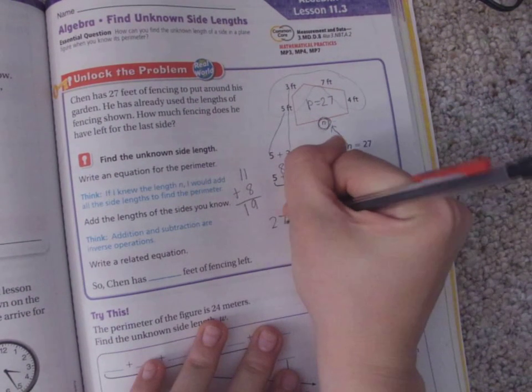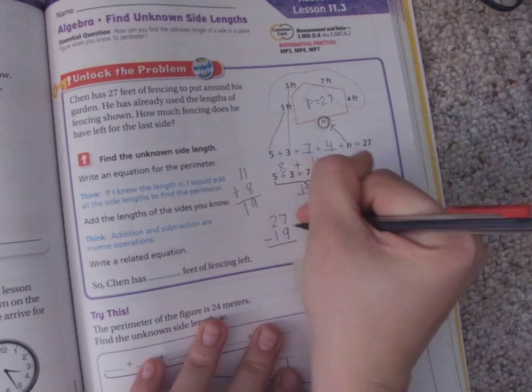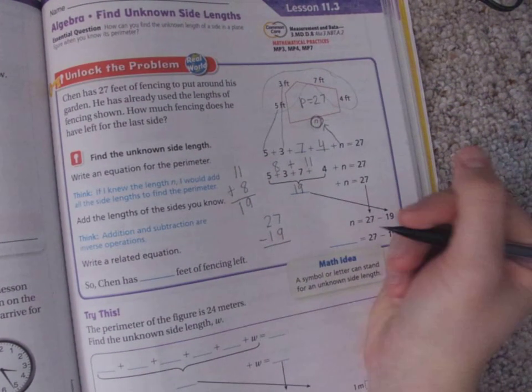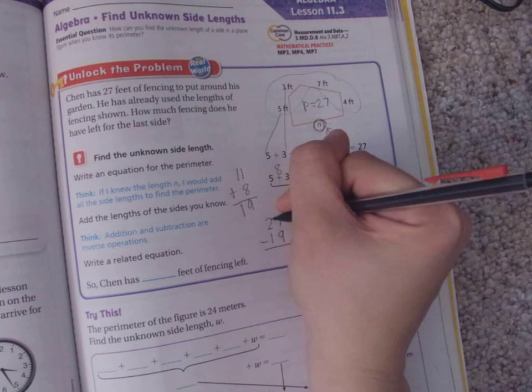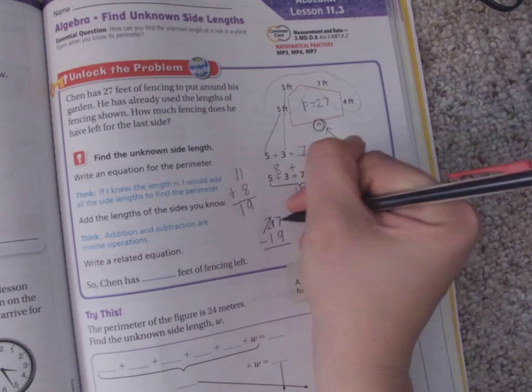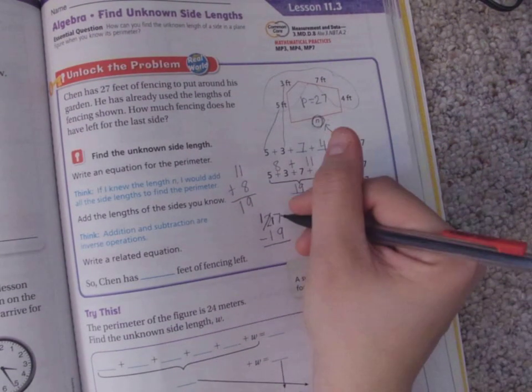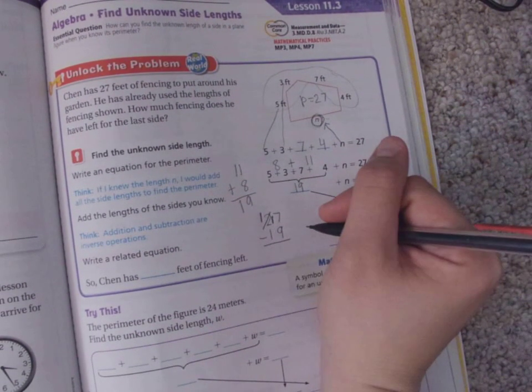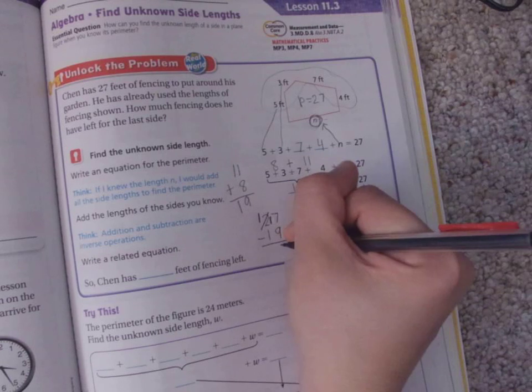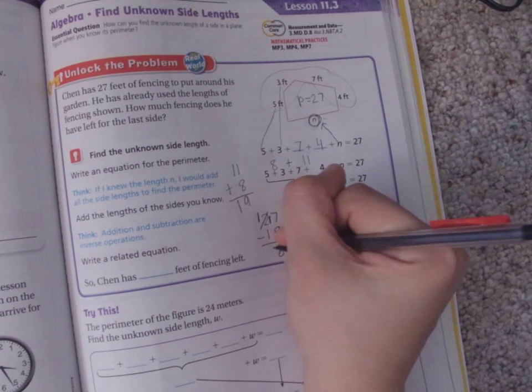So we need to do 27 minus 19. This is a throwback to our borrowing. So can I do 7 minus 9? I cannot. So I need to go next door and borrow 10 more. So I'm going to borrow 10, and then this will turn into a 1. So 17 minus 9 is 8, and I know that 1 minus 1 is 0.